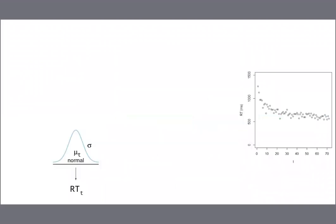To explain our statistical model, I'm going to focus on just one of the nine different curves. We modeled the response time at time t as being generated by a normal distribution with mean mu and standard deviation sigma. You can think of mu as representing the trend line in the data, and sigma represents the dispersion of the data around the trend line. If sigma were very small, then the points would all sit nicely on the line.